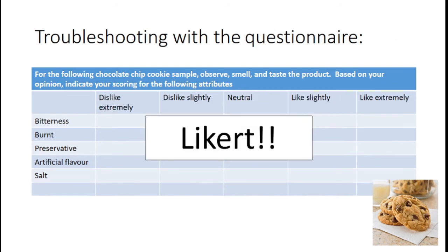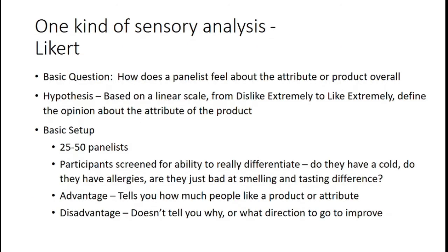Think about it differently with Likert: 'I dislike the bitterness.' Some negative attributes — burnt almond, a bit of burnt flavor in coffee — can actually be positive attributes in certain contexts. So you need to be really aware of context. Jumping into Likert: you've likely seen these scales before. This is one of the most common survey tools out there for soliciting opinion.